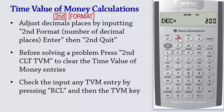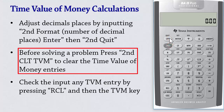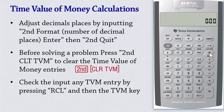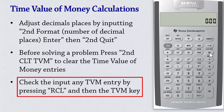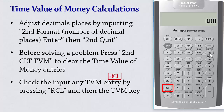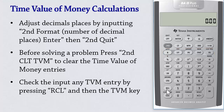Press Enter and then 2nd Quit. Before solving any problem, press 2nd Clear Time Value of Money to clear TVM entries. You can always check the values stored in the TVM entries by pressing the Recall button and then the TVM key. For example, Recall Present Value shows 0 and Recall Payment shows 0 because I cleared the TVM entries.